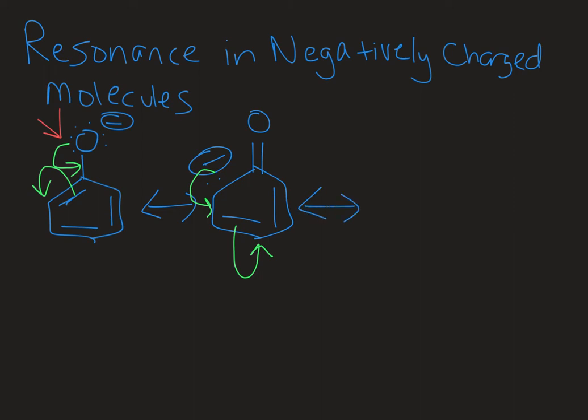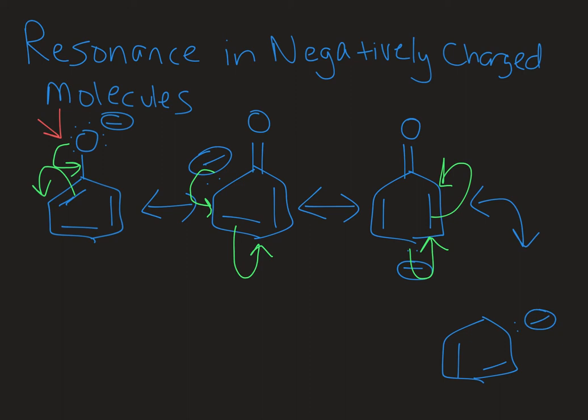So these are resonance arrows that I'm drawing here. Now I have a negatively charged carbon on the bottom of the ring. Those electrons can fold in to form a double bond, these will fold out. I'm going to sort of draw this one looking like this so we can go down.